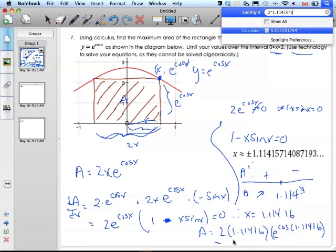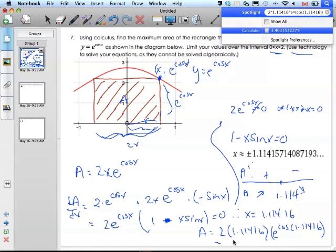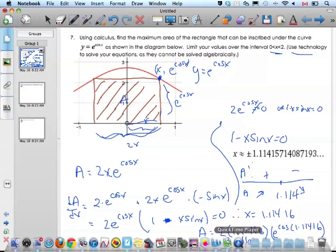So 2 times 1.11416 times e to the power of cosine 1.11416. I get 3.46 if I put it into my calculator correctly. And that will be all she wrote.